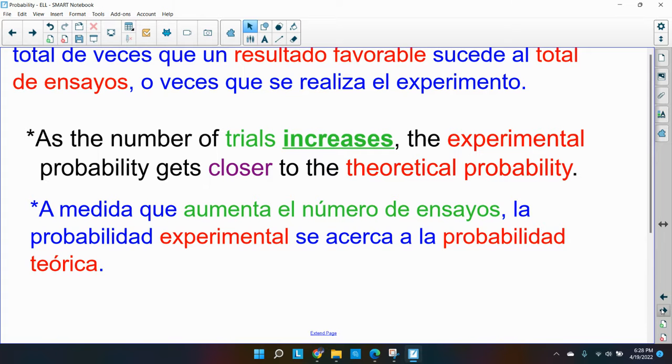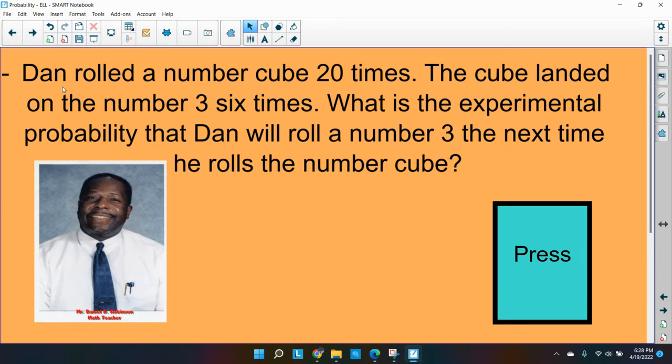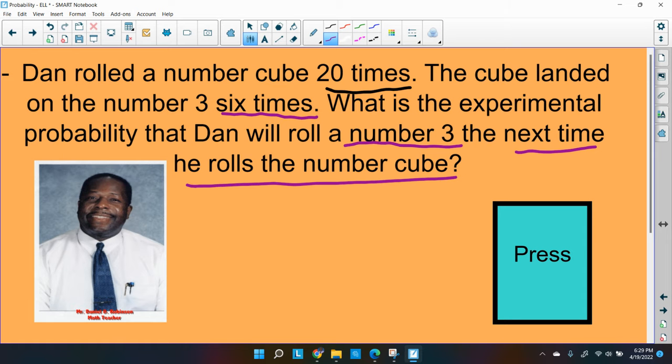So let's take a look at an example we have here. So Dan, and that's me down there, rolled a number cube 20 times. All right, so 20 times. Let me underline that. The cube landed on the number three six times. So that's important. So he got a three six times.